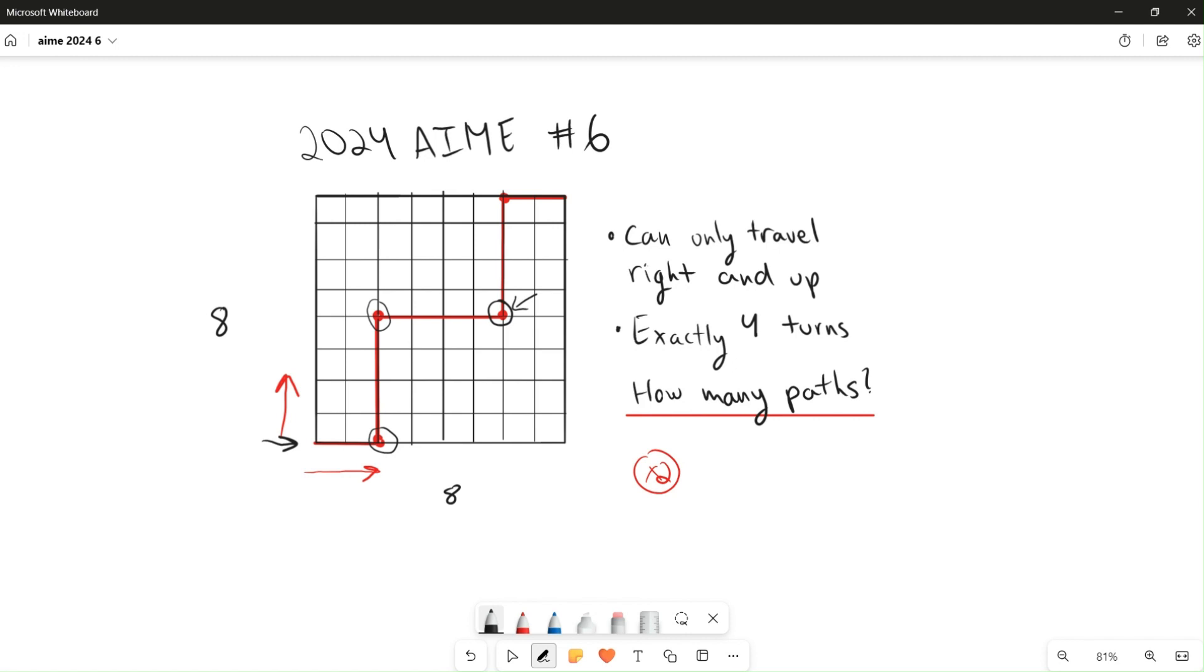So these three turns is what actually determines the path. Basically, we need to find how many ways there are to make these turns.